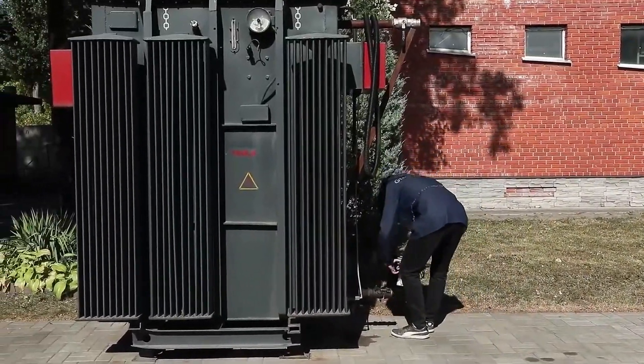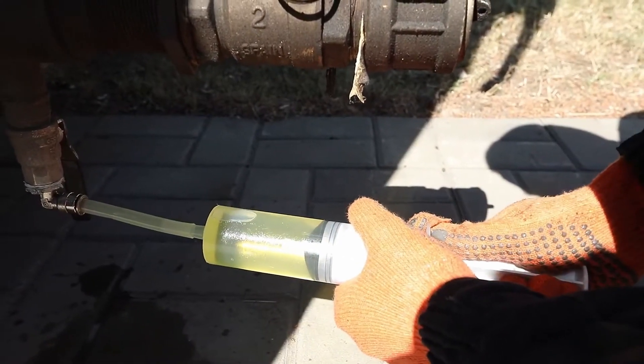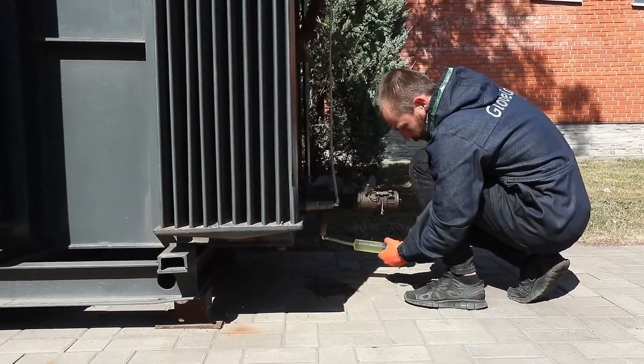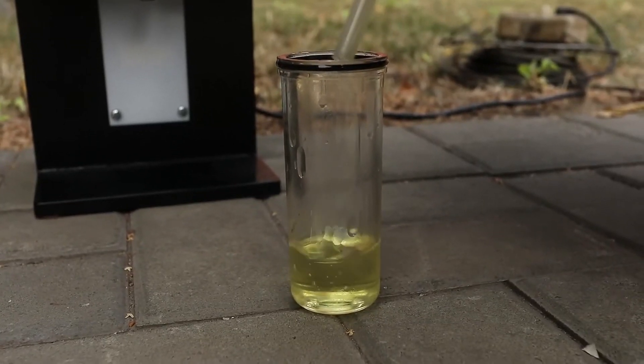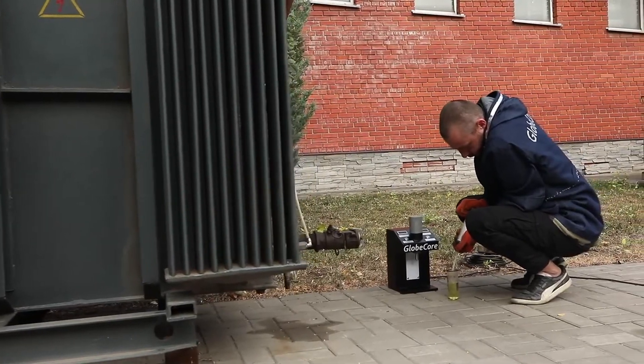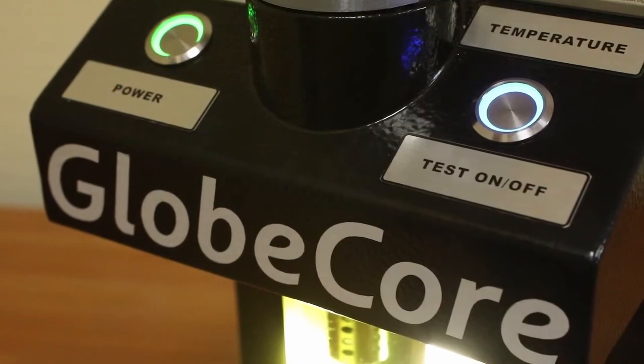After that, you can start testing the next sample of oil. The protection class of the instrument allows testing the insulating oil near transformers in any weather, and the sensor operates at an ambient temperature of minus 40 to plus 60 degrees Celsius.